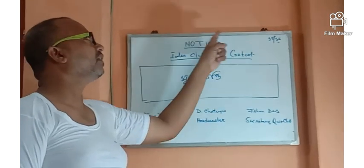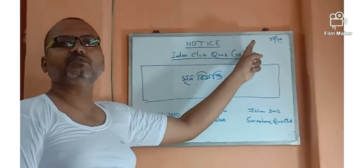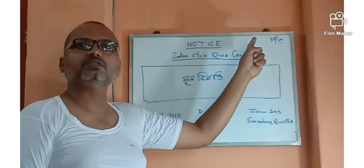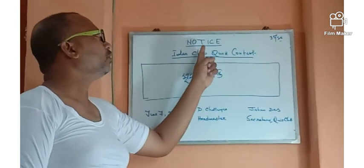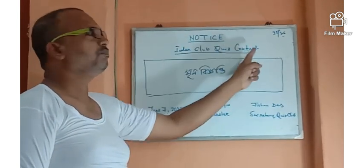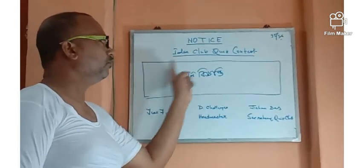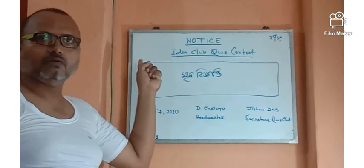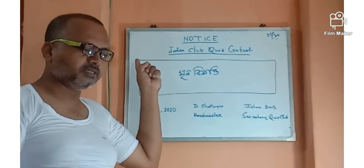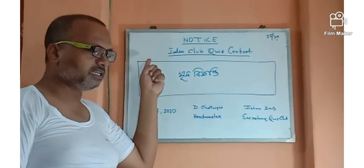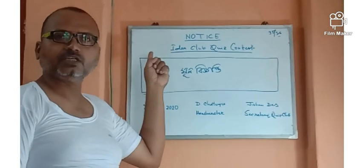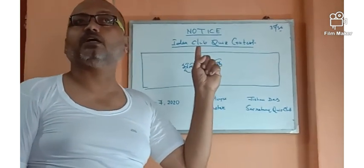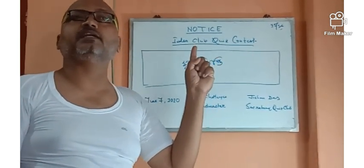From here, the students will — when they have to read the class, they will take the ones, and they are going to read the number of their ID. Here is the ID. Then, if you can see the ID — this ID is the ID.